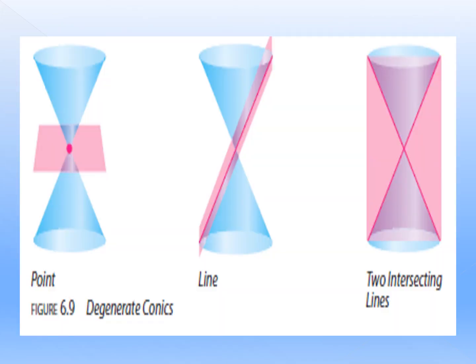So let's take a look at the figures. On the first illustration, if we cut a double nappe cone horizontally and it passes through the vertex, we cannot form a circle — instead we form a point. On the second illustration, you can see that if we cut the double nappe cone in this way, we cannot form an ellipse or a parabola.